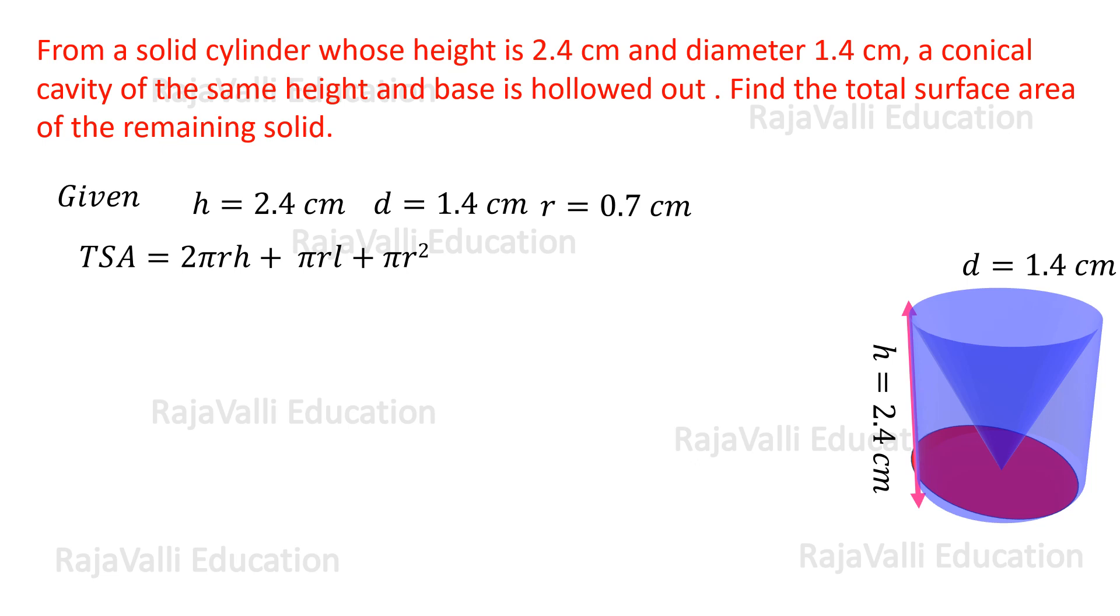So TSA equals 2πrh plus πrl plus πr². By taking πr as a common, we get πr(2h + l + r).